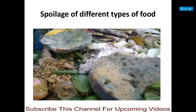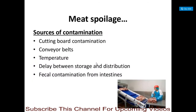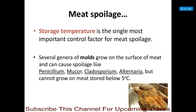Now we will look at spoilage of specific types of foods. Starting with meat spoilage: storage temperature is the single most important control factor for meat spoilage. Temperature plays a very important role in the spoilage of meat.